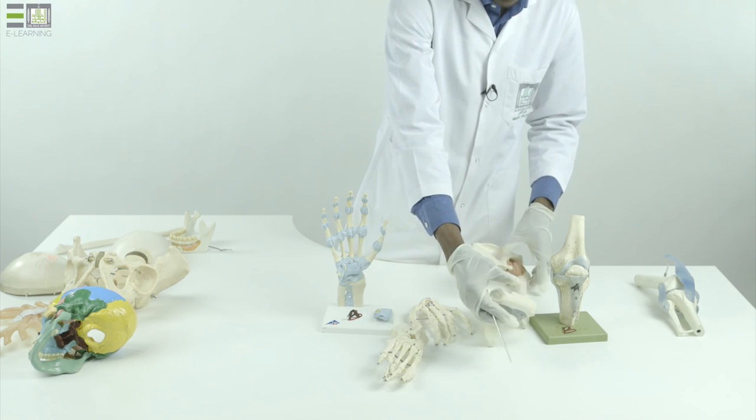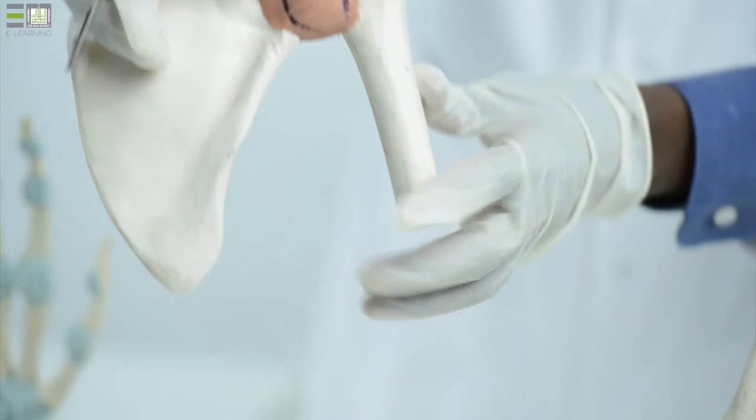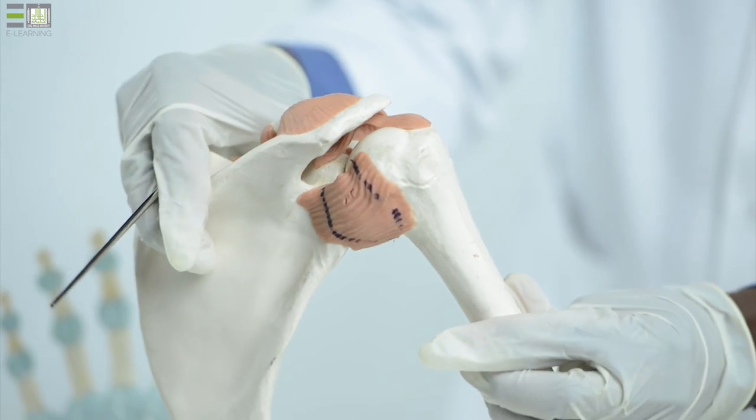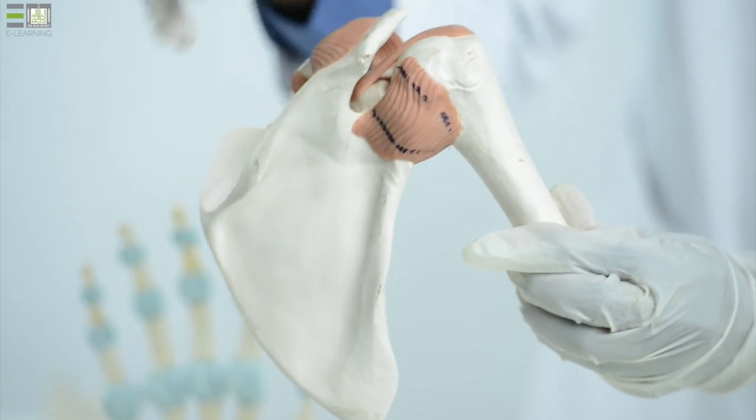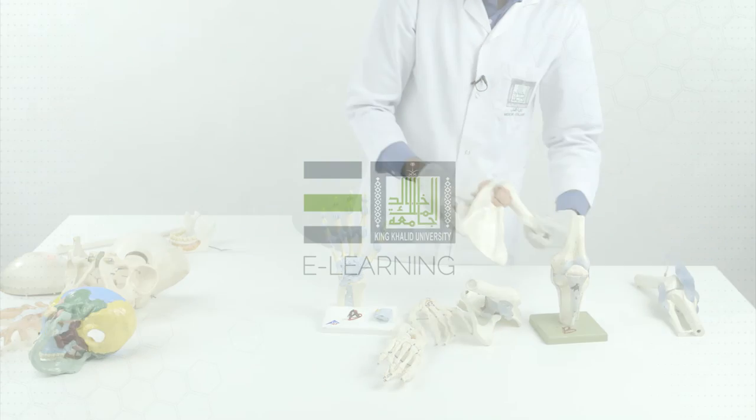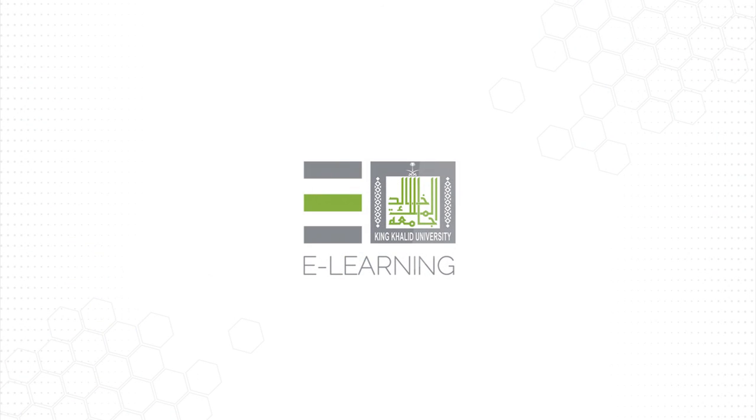And also, the other example is present between the upper end of the humerus and the glenoid fossa of the scapula, ball and socket. And it is the most powerful.